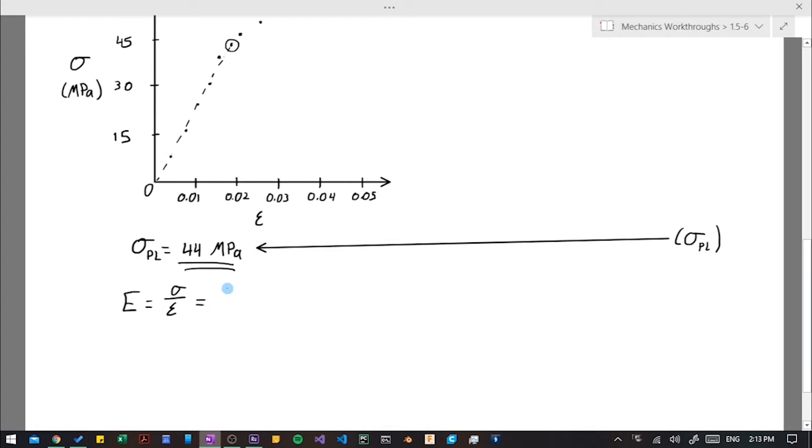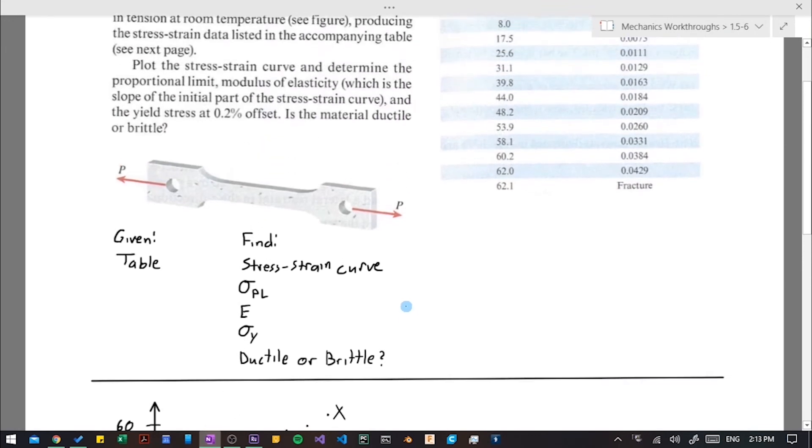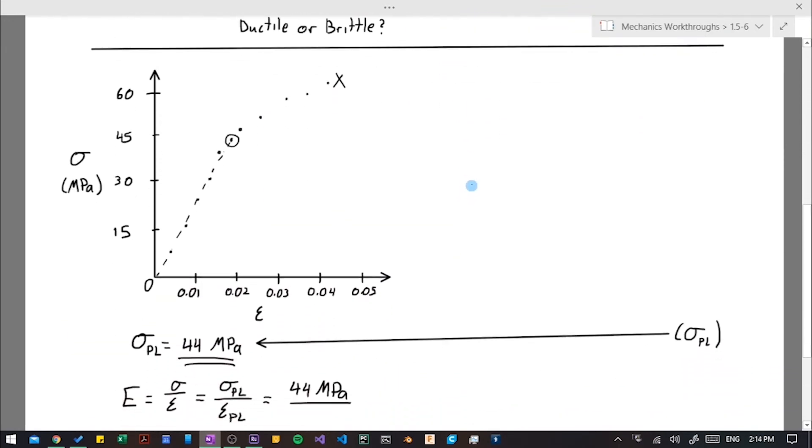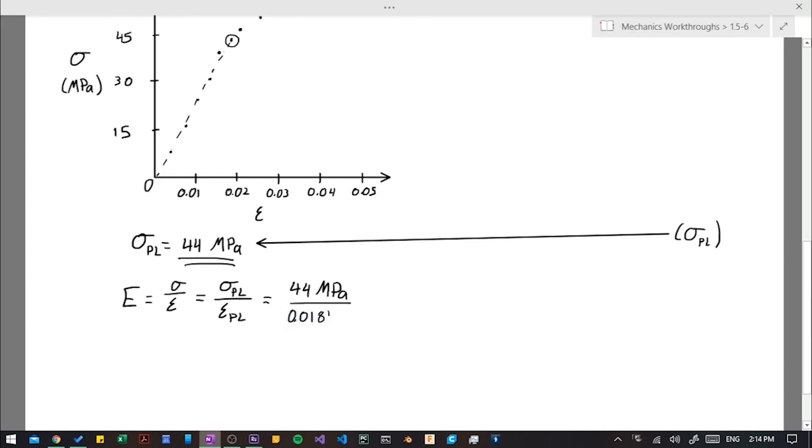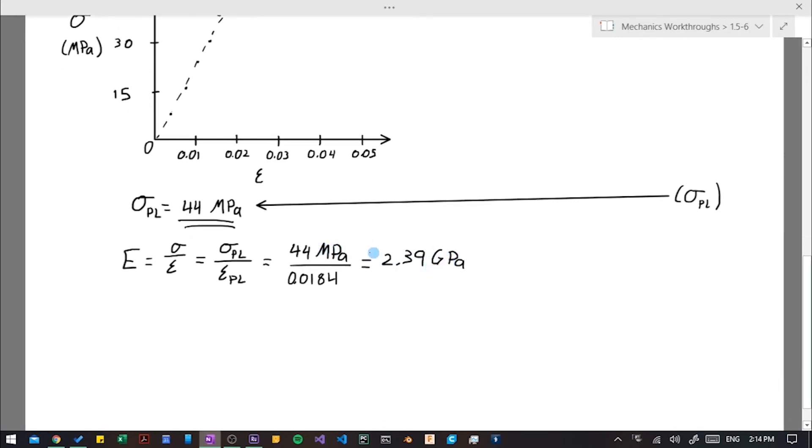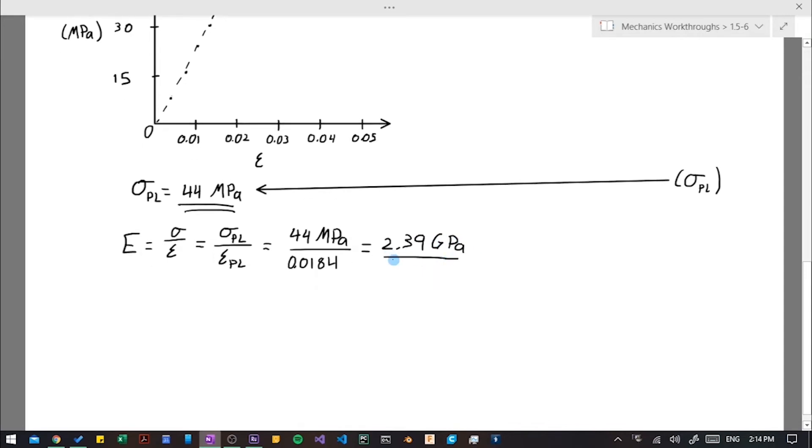So in this situation, we are going to use our proportional limit over the strain at that same point. So this is going to be 44 megapascals over 0.0184. And this is equal to 2.39 gigapascals. And remember our unit prefixes, mega means 10 to the sixth, while giga means 10 to the ninth.